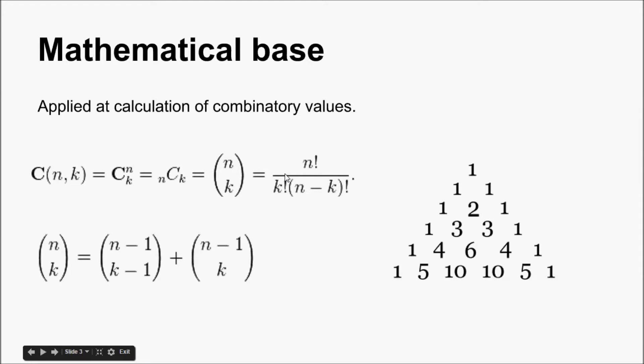It can be found by the equation here: n factorial divided by k factorial times n minus k factorial. But this is also the formula for a cell of Pascal's triangle. Rather than performing the calculation, one can simply look up the appropriate entry in the triangle.